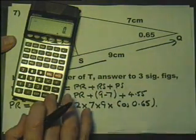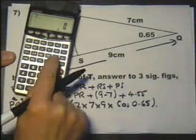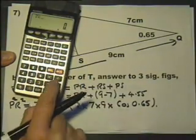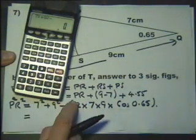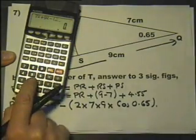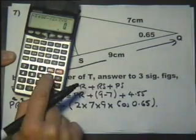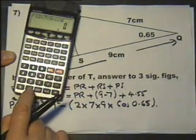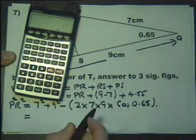So we've got 7² + 9² minus, these brackets are very important when using the calculator, 2 × 7 × 9 × cos(0.65 radians). Close brackets, equals.